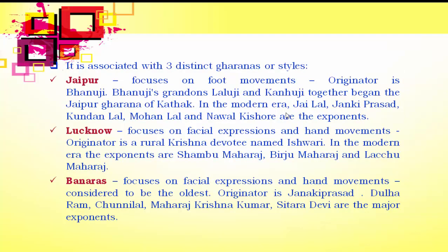Kathak has three distinct gharanas or styles. The Jaipur gharana focuses on foot movements; its originator is Bhanuj, and his grandsons Lalu ji and Kanhau ji together began this gharana. Modern exponents include Jailal, Janki Prasad, Kundanlal, Mohanlal and Nawalkishwara. The Lucknow gharana focuses on facial expressions along with hand movements; the originator is a rural Krishna devotee named Ishwari, and modern exponents are Shambhu Maharaj, Birju Maharaj and Lachu Maharaj. The Banaras gharana also focuses on facial expressions with hand movements and is considered the oldest; the originator is Janaki Prasad, and major exponents include Doolha Ram, Chunilal, Maharaja Krishna Kumar and Sitara Devi.